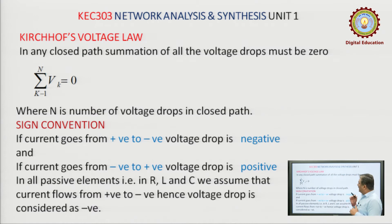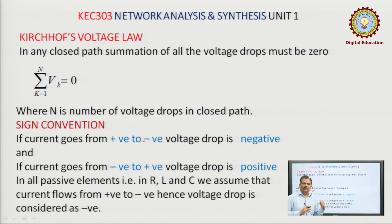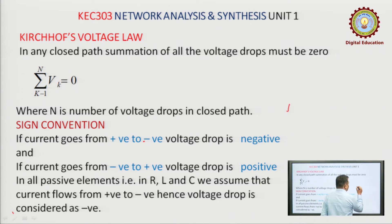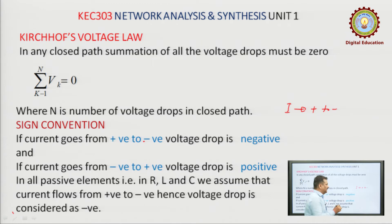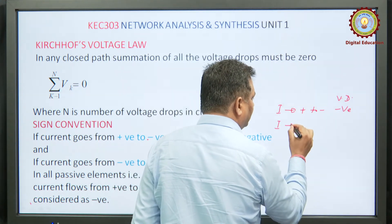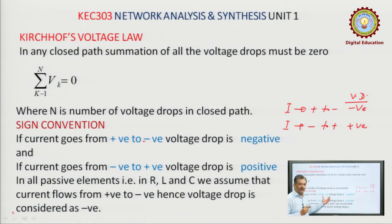To apply Kirchhoff's voltage law, we follow a sign convention. If current goes from positive to negative, the voltage drop is considered negative. If current goes from negative to positive, the voltage drop is considered positive. The important thing is the direction of current flow. These are the two important sign conventions.